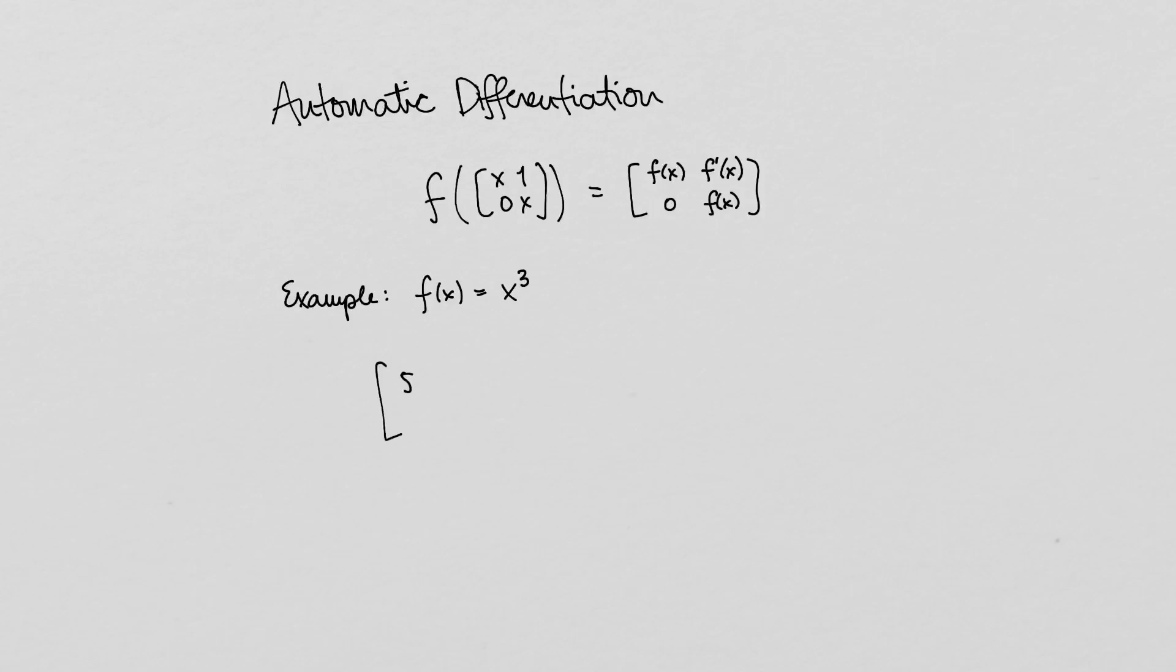For example, if f is the cubing function, then f of 5 1 0 5 is equal to 125 75 0 125. And indeed, the diagonal entries 125 are equal to the value of the function f evaluated at 5, and the derivative 3x squared evaluated at 5 is equal to 75.